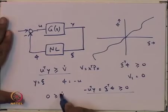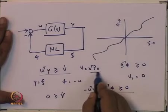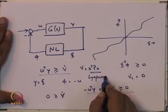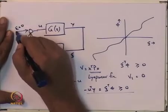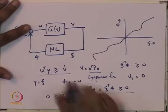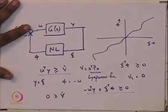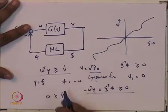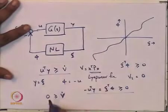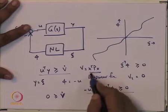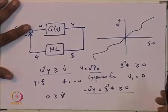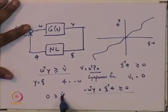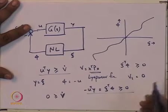Now what this means is that if you use V = X transpose PX as a Lyapunov function for this closed loop system, assuming the external input is 0 — so this is a system with no inputs — then the conditions are satisfied, 0 ≥ V-dot, and V = X transpose PX can act as a Lyapunov function for this closed loop system. Its derivative is less than or equal to 0, so you can conclude that the resulting system is stable.